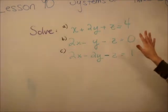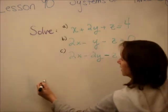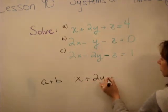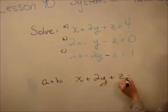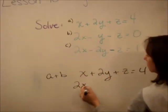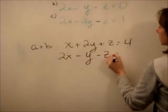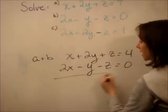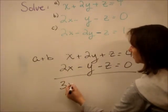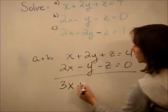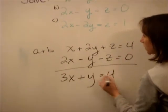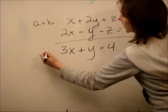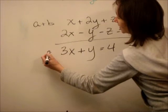This first one's really easy. We're going to add equation a plus b together. We get x plus 2y, and 2x minus y minus z equals zero. I just recopied a and b and added them together, so we get 3x plus y equals 4. We'll call this equation d.